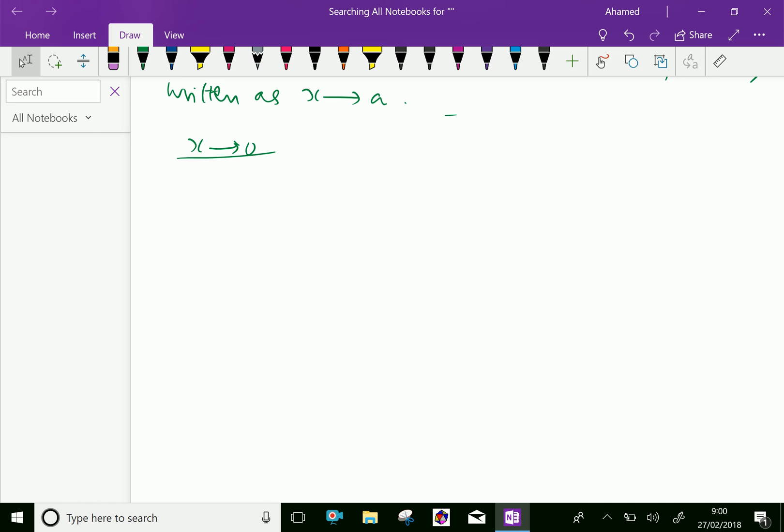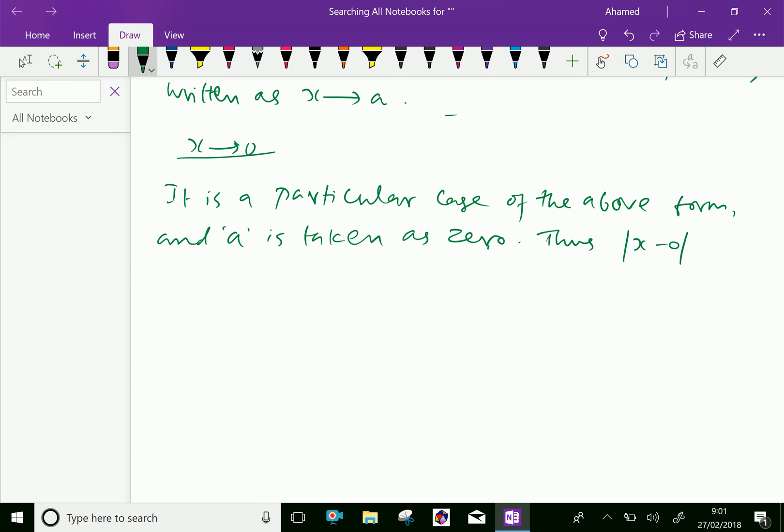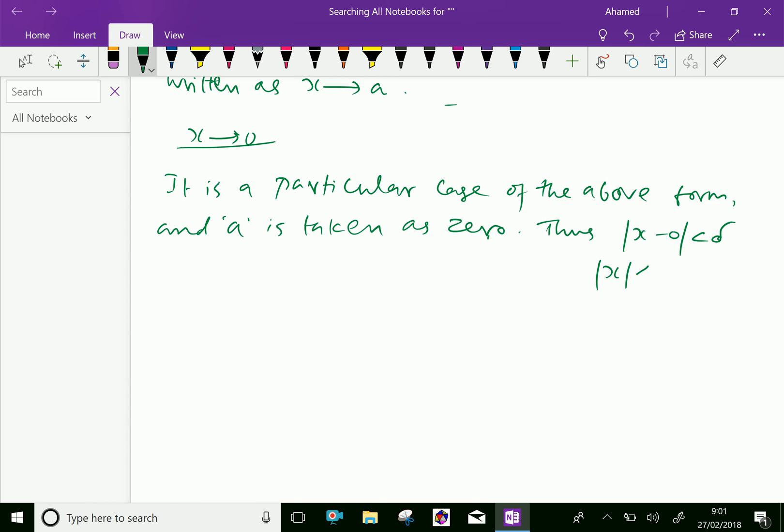Here it is a particular case of the above form, and a is taken as 0. Thus, modulus of x minus 0 is lesser than delta, which means modulus of x is lesser than the value delta.